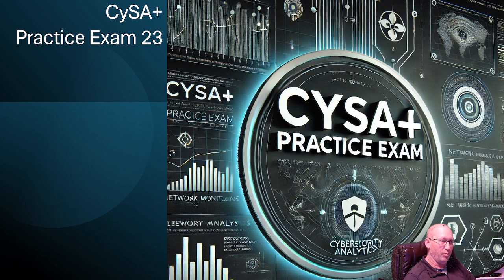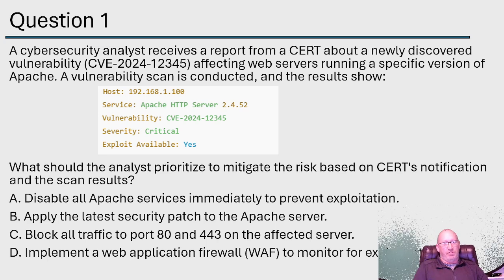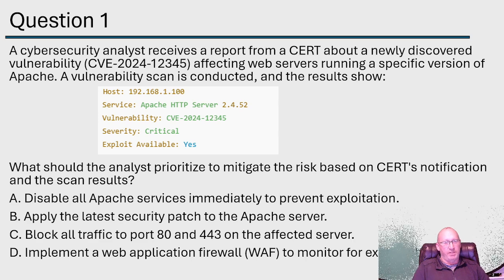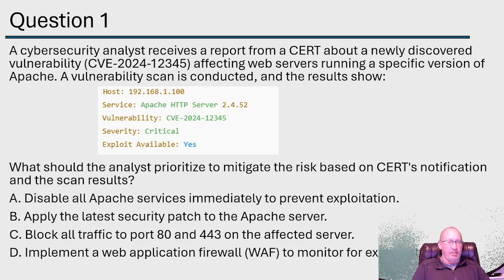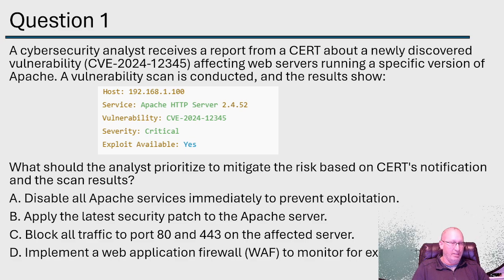Let's see if we can't stump you. Question number one. A cybersecurity analyst receives a report from a CERT about a newly discovered vulnerability — that vulnerability number — affecting web servers running on a specific version of Apache. A vulnerability scan is conducted and the results are shown. What should the analyst prioritize to mitigate the risk based on the CERT notification and scan results?